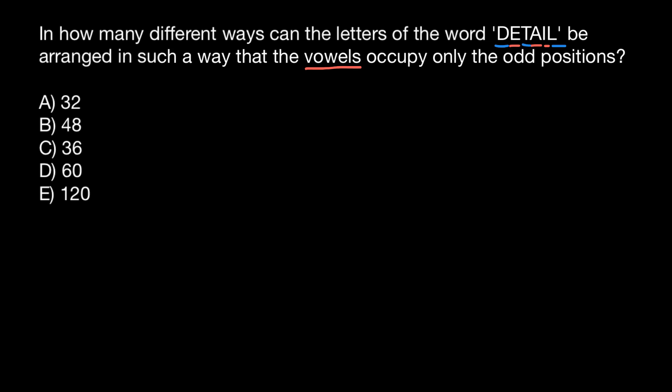According to our problem, vowels only can occupy odd positions. Out of six, odd positions would be position number one in a word, number three, and number five. And for the consonants, they can only occupy number two, number four, and number six.